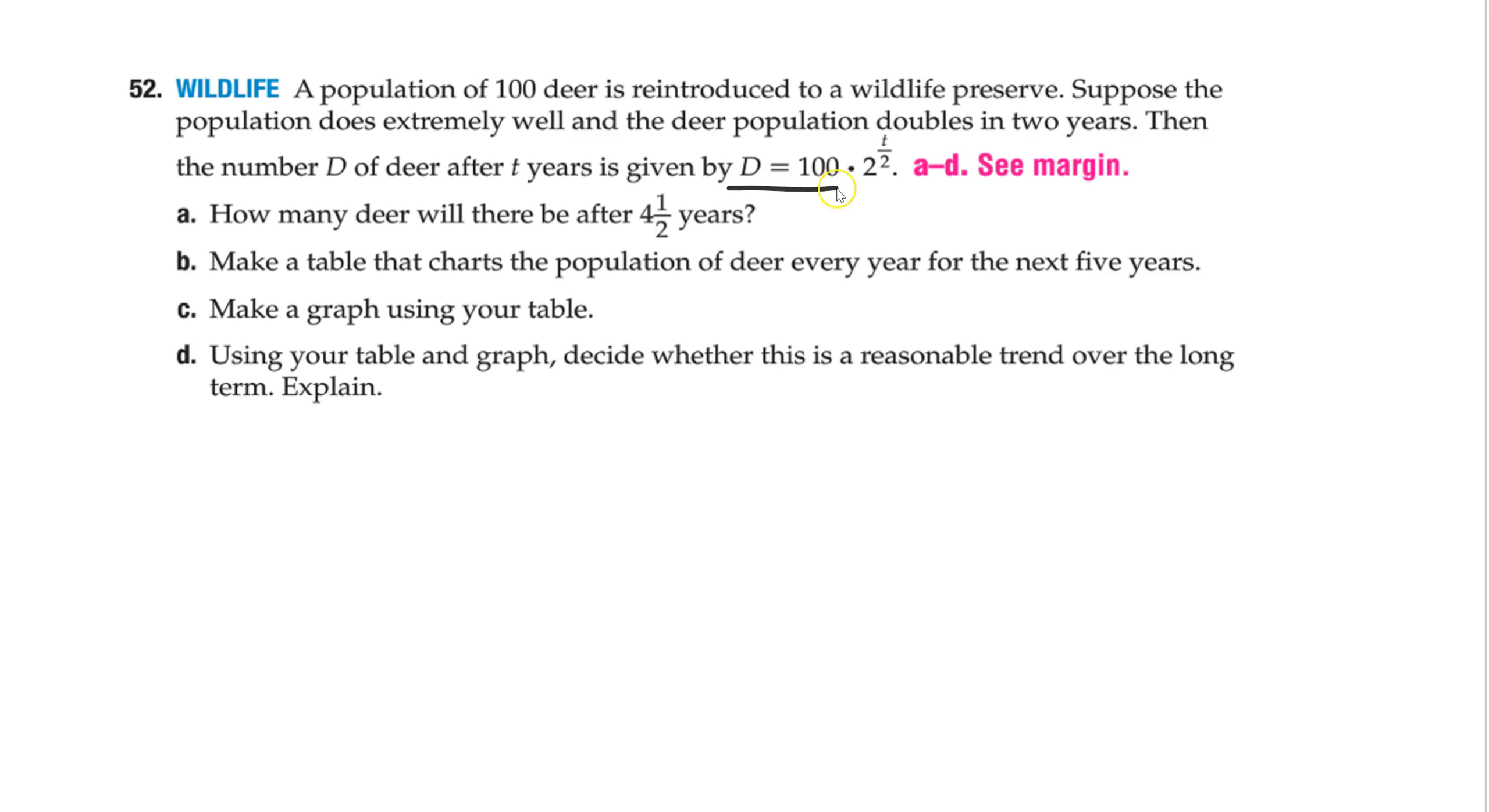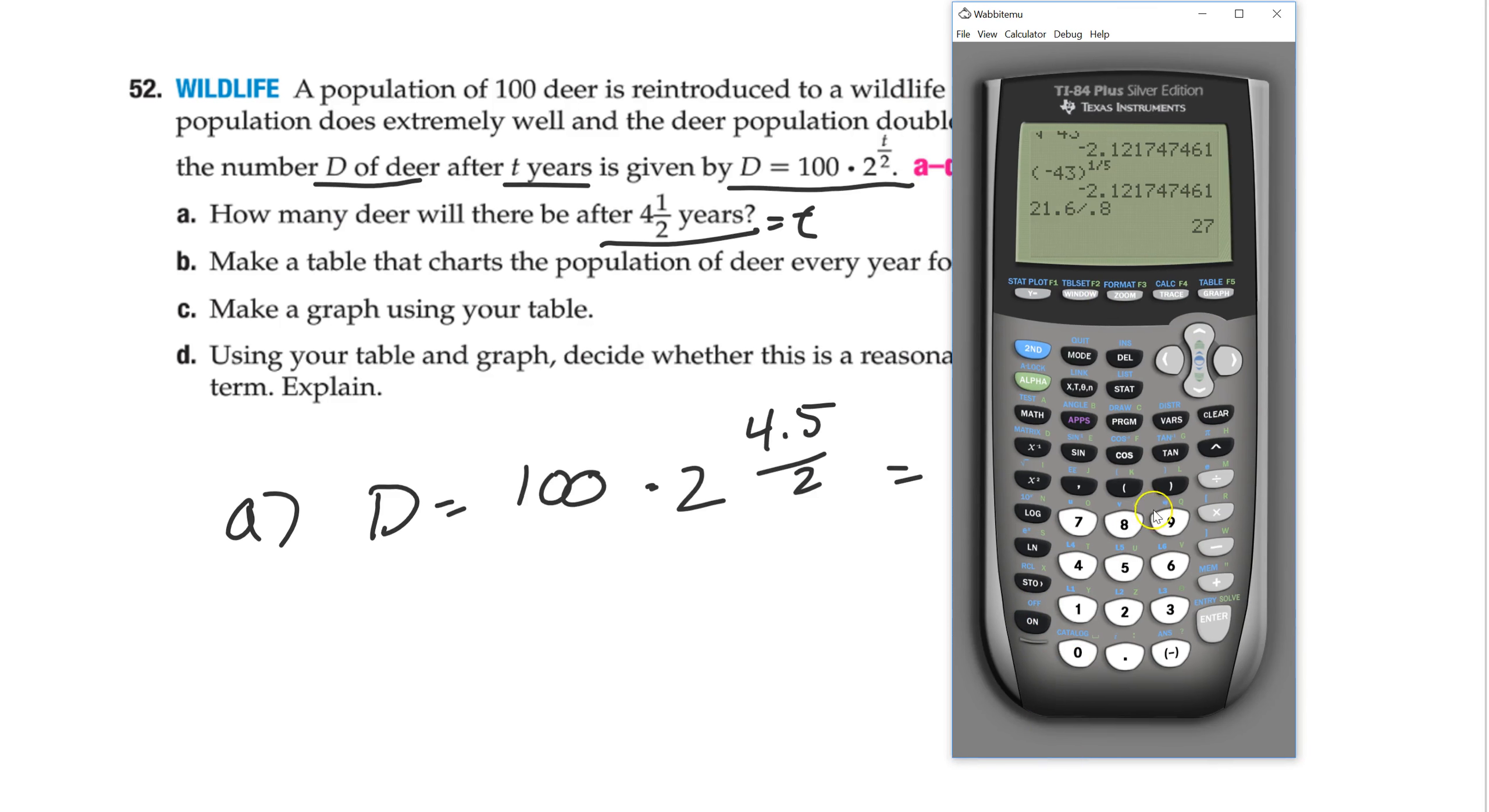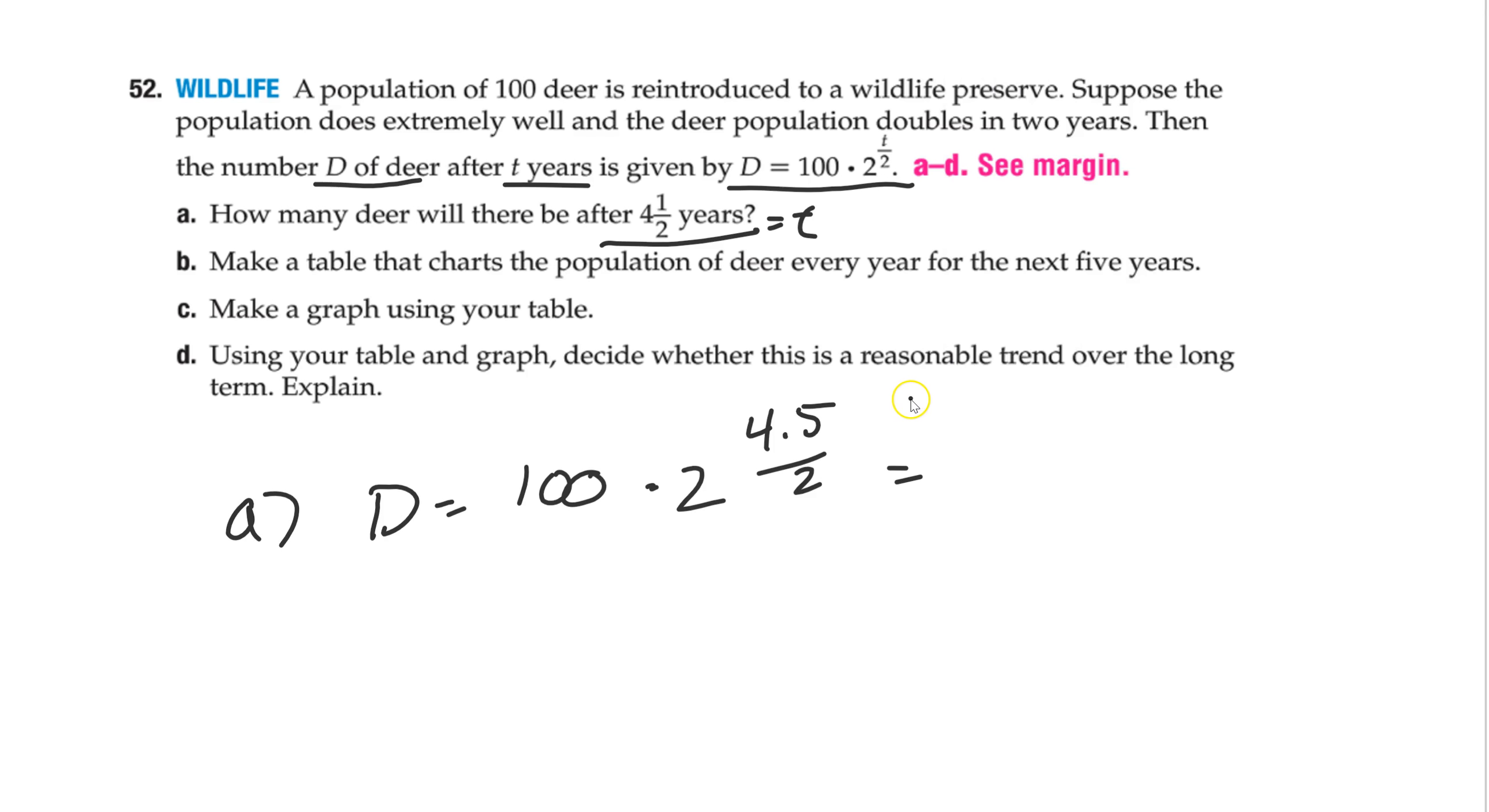Suppose the population does extremely well and the deer population doubles in 2 years. Then the number of deer, D, after T years is given by its formula. So again, we have a formula. Make sure you know what each thing stands for. T is years. D is the number of deer. So we have that formula. How many deer will there be after 4 and a half years? So that's our T. So all I got to do for A is plug that in. So I got to plug 4.5 over 2. Again, it's an application problem, so feel free to use your calculator. I want you to use it. I'm not going to do that by hand. So it's going to be 100 times 2 to the 4.5 divided by 2. So about 476 deer.